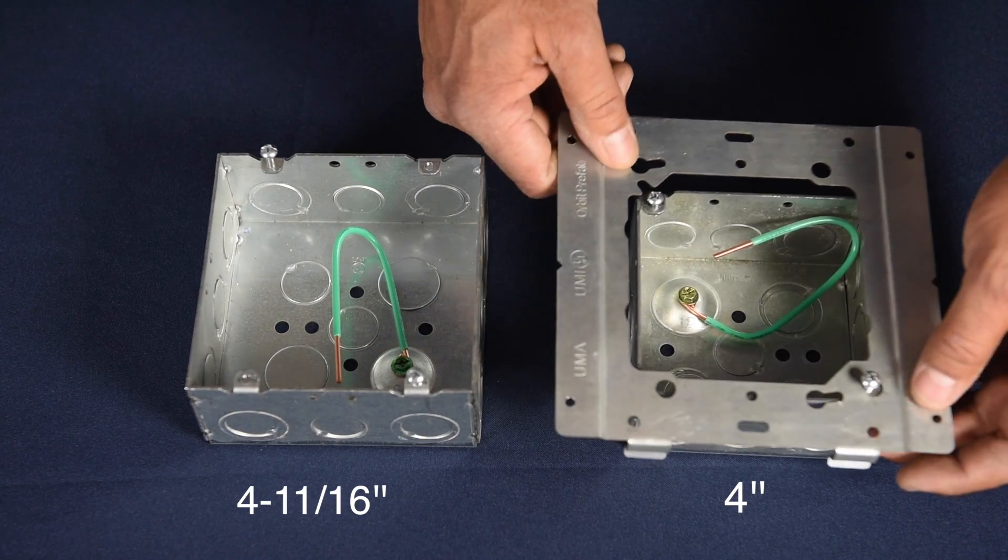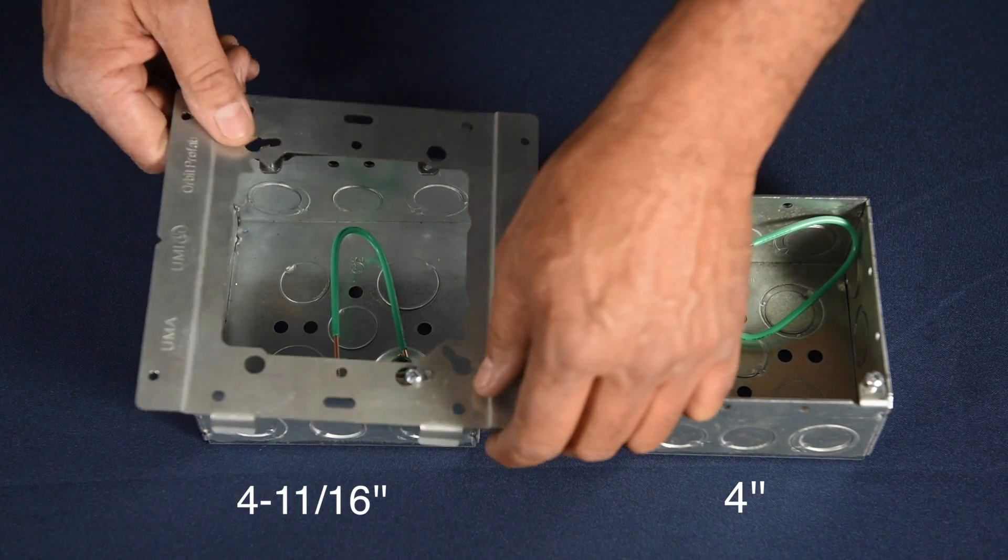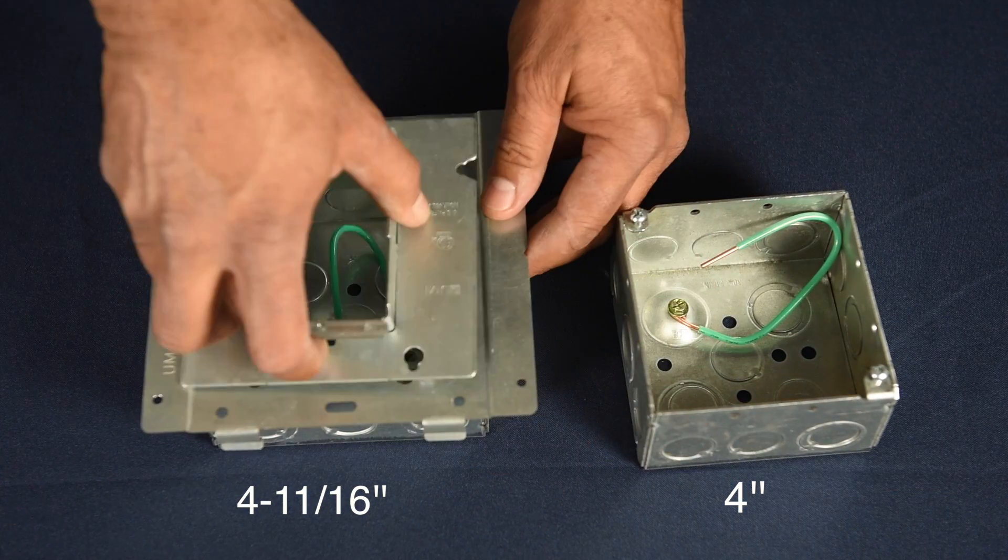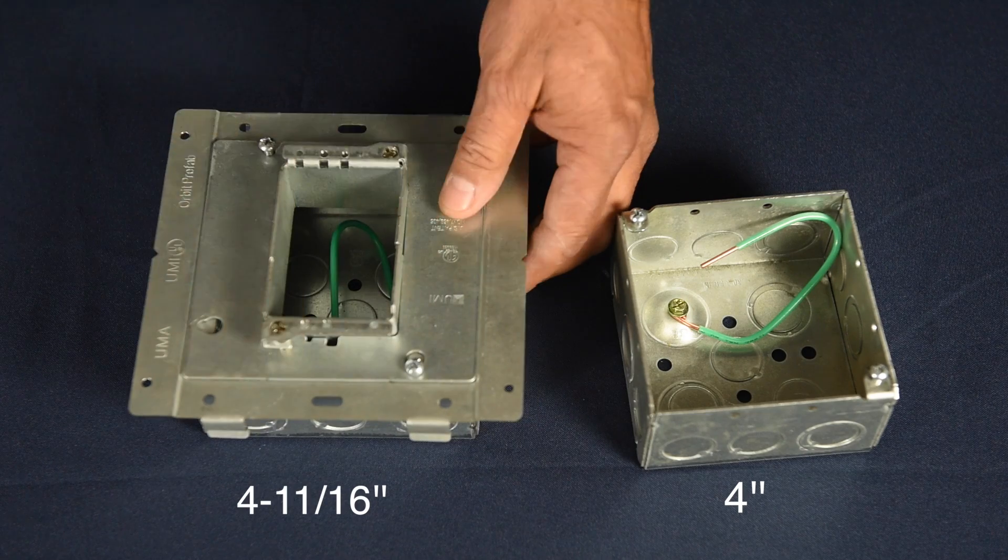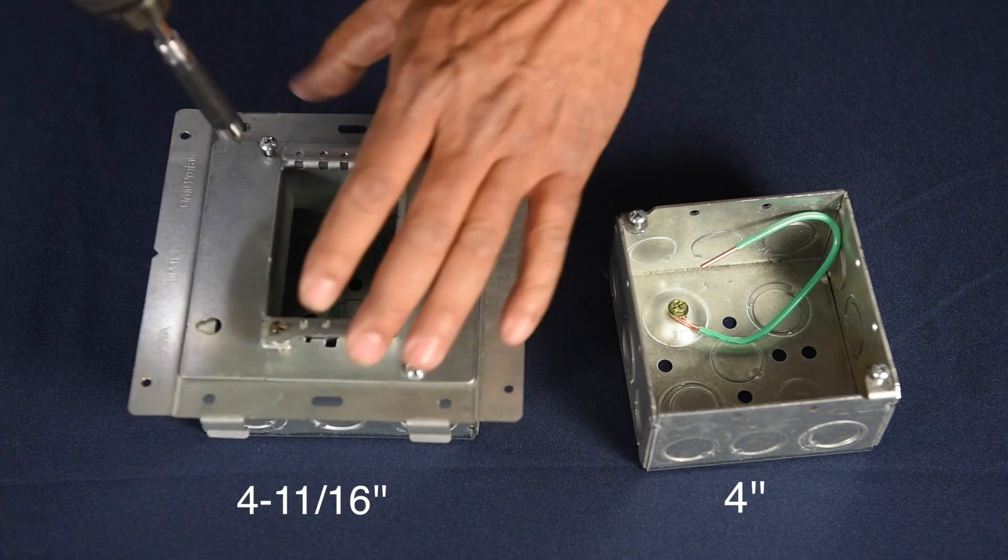The UMA features keyholes that easily fit both four and four and eleven sixteenth inch square boxes. The UMA accepts boxes and rings to form a versatile box and ring assembly.